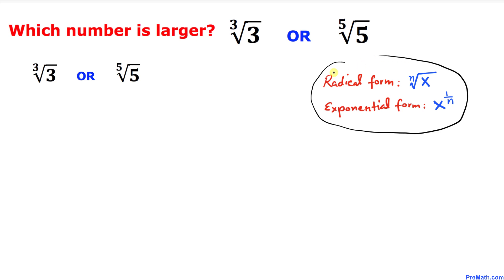Here our index is n. In our case, our index is three in this first number and five in the second one. Therefore, this cube root of three could be written as three power one over three, and this fifth root of five could be written as five power one fifth.